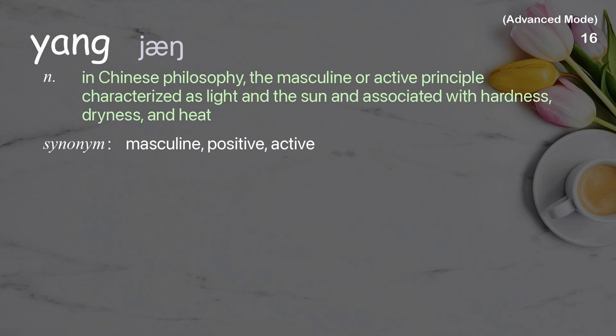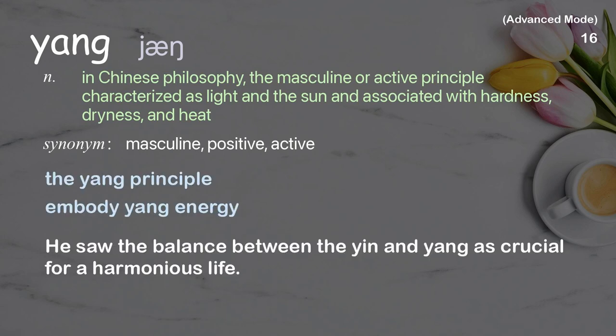Yang: in Chinese philosophy, the masculine or active principle, characterized as light and the sun and associated with hardness, dryness, and heat. Examples: the yang principle. Embody yang energy. He saw the balance between the yin and yang as crucial for a harmonious life.